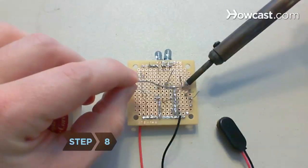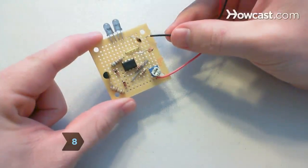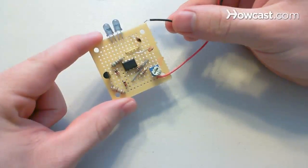Step 8: Solder the components, with the exception of the wire running to the negative battery terminal, on a small piece of strip board.